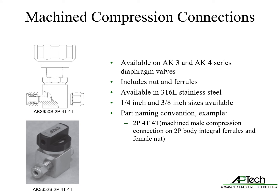Machine compression connections are available on the AK-3 and AK-4 series diaphragm valves. This option also includes the female nut and ferrules pre-installed, and is available for 316L stainless steel bodies in 1/4 and 3/8 inch. An example of the part naming convention for a machined compression connection valve is 2P4T4T, meaning a machined male compression connection on a two-ported P-style body with integral ferrules and female nut.